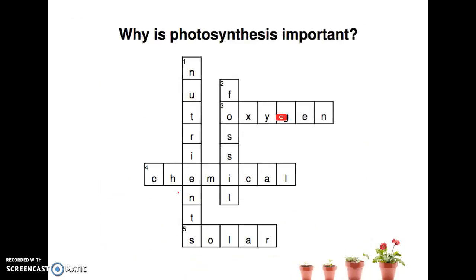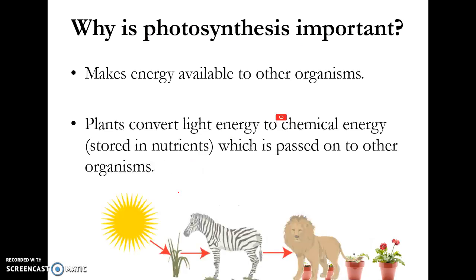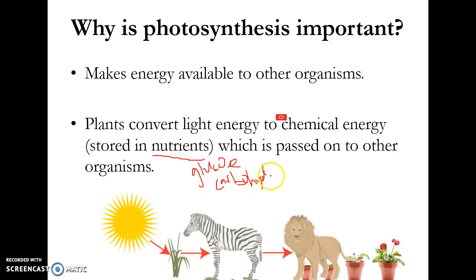So why is photosynthesis important? Well, a few basic reasons that you guys should already be familiar with. Firstly, photosynthesis makes energy available to other organisms. Without plants, basically no other organisms, including our cells, would have any energy available. Plants convert the light energy from the sun to chemical energy stored in nutrients like glucose and carbohydrates, which are passed on to other organisms through feeding.